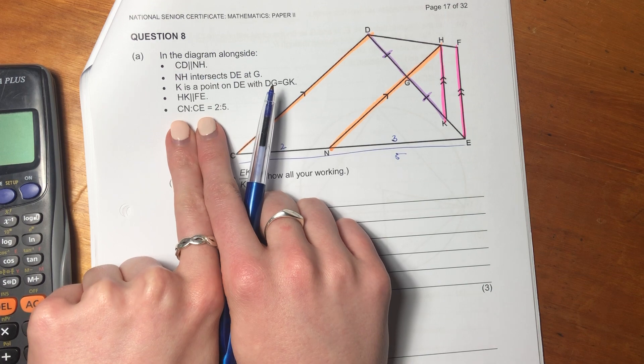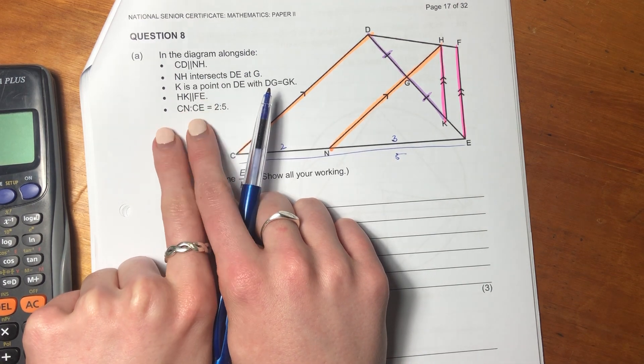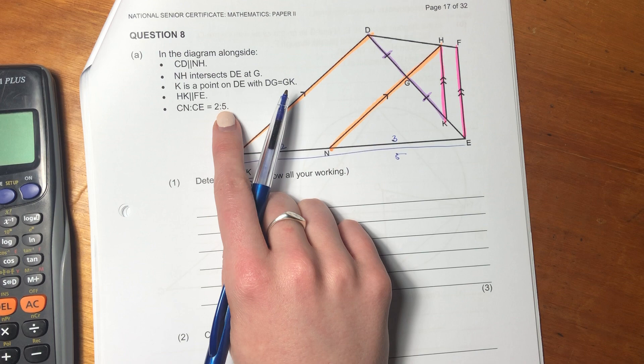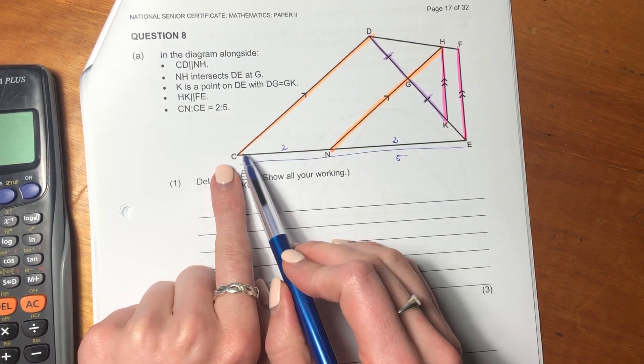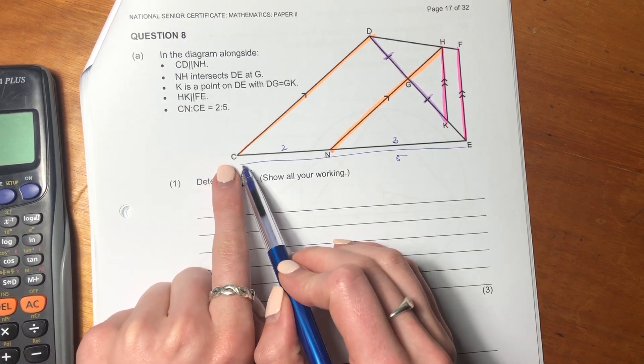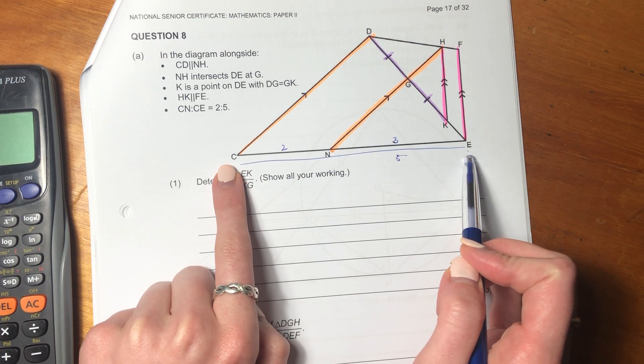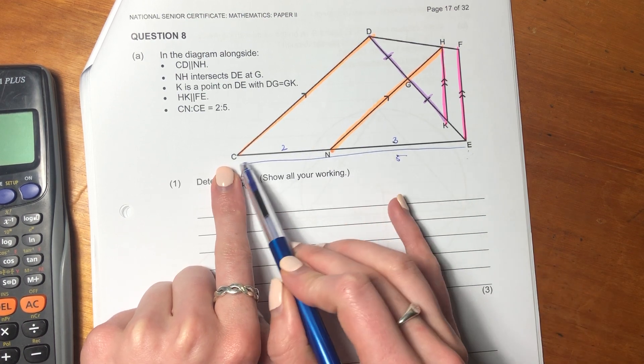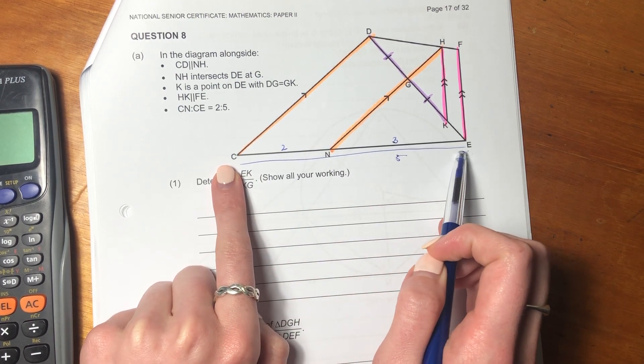Oh wait, we didn't look at our last piece of information. It says CN in ratio to CE is 2 to 5. So I've said, okay, well CN is 2 and in relation to CE is 5. So that'll be 2 and that'll be 3 and this whole side is 5.